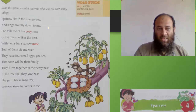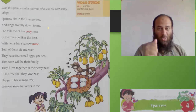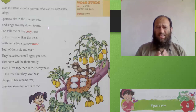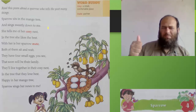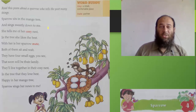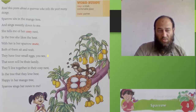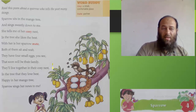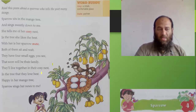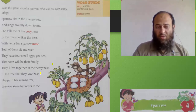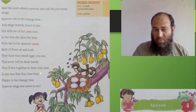The sparrow sits in the mango tree and sings sweetly down to me. She tells me of her cozy nest. In the tree she likes the best. With her is her sparrow mate. Both of them sit and wait. They have four small eggs, you see, that soon will be their family. They live together in their cozy nest. In the tree that they love best. Happy in her mango tree, sparrow sings her news to me.